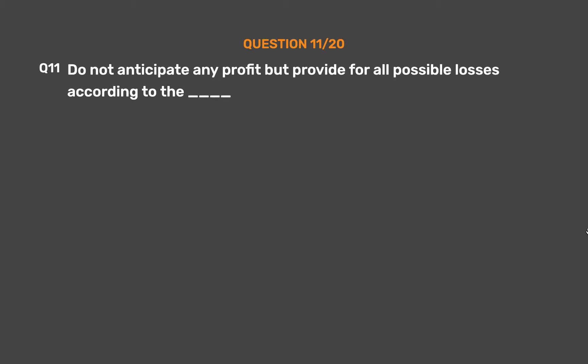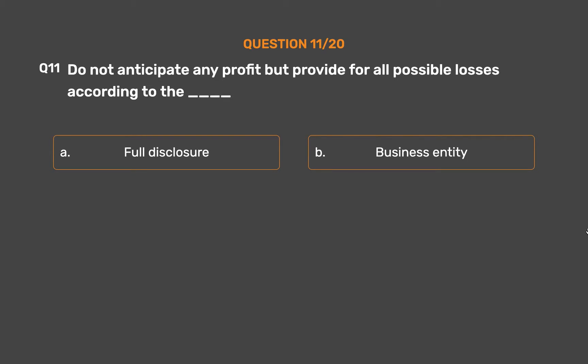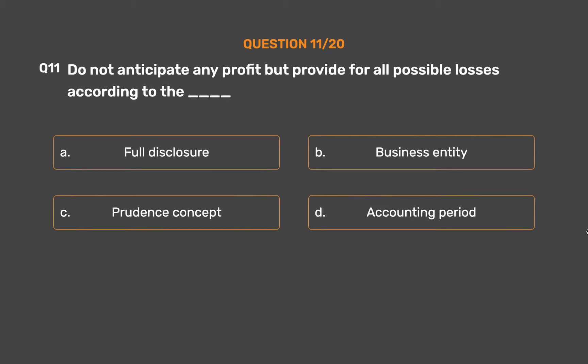Question No. 11: Do not anticipate any profit but provide for all possible losses — according to which principle? Option A: Full Disclosure. Option B: Business Entity. Option C: Prudence Concept. Option D: Accounting Period.